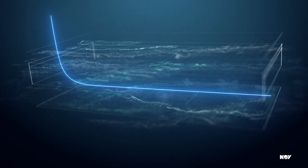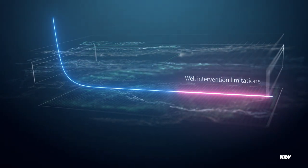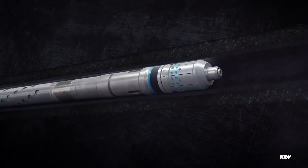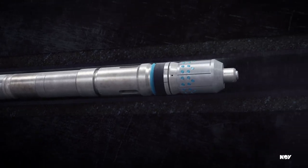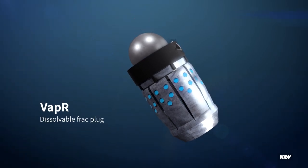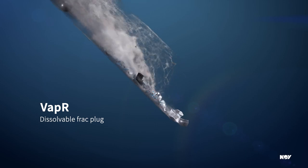Setting or milling frack plugs at deeper sections of long lateral wells creates well intervention limitations. For further production recovery from extended horizontal sections in which coil cannot efficiently mill plugs, vapor dissolvable frack plugs are used for completions as milling is not required for their removal.